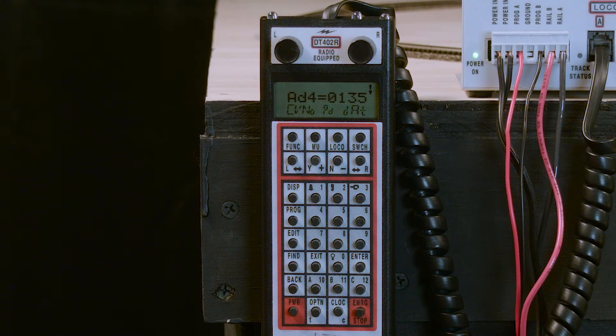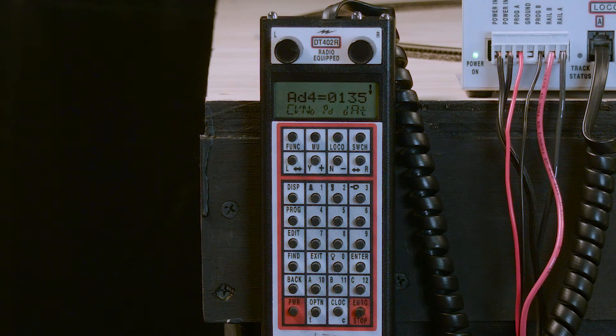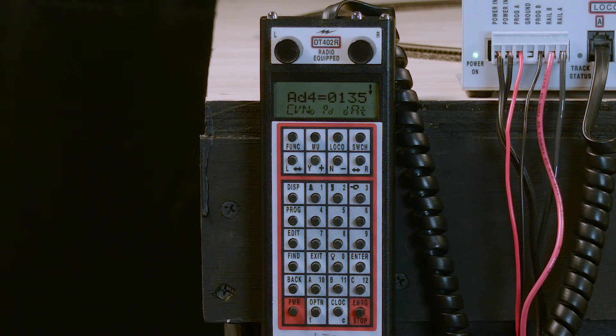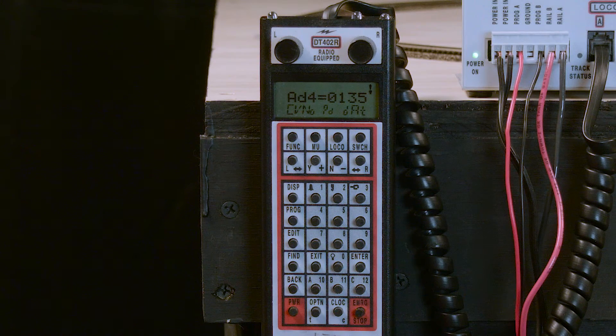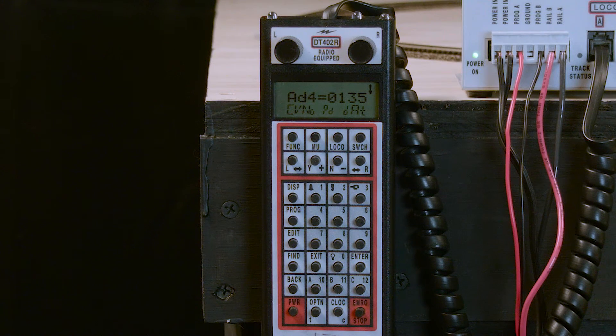We also want to change a CV. In this case, we want to change the headlight to function as a Mars light instead of a headlight. The headlight in this case is controlled by CV49 and to make it a Mars light, we have to give CV49 a value of 34.